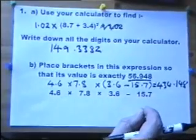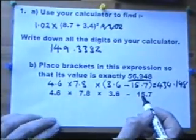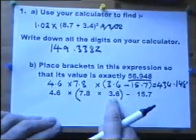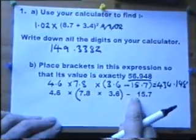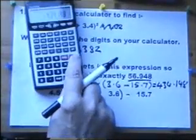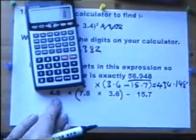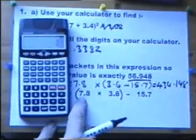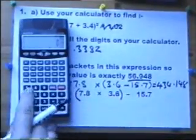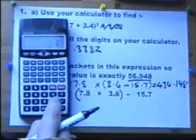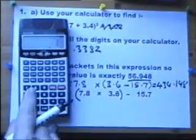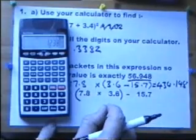And you're expected to experiment until you in fact find the right way. It actually turns out that you need to work out this part. And the result of that needs to have the 15.7 taken away. So let's just play around for that for a moment. Let's ignore the 4.6 at the front. And let's just try multiplying these two together. And then subtracting that. So open brackets, 7.8 multiplied by 3.6 close brackets, minus 15.7 equals. Now in the window I've got 12.38.